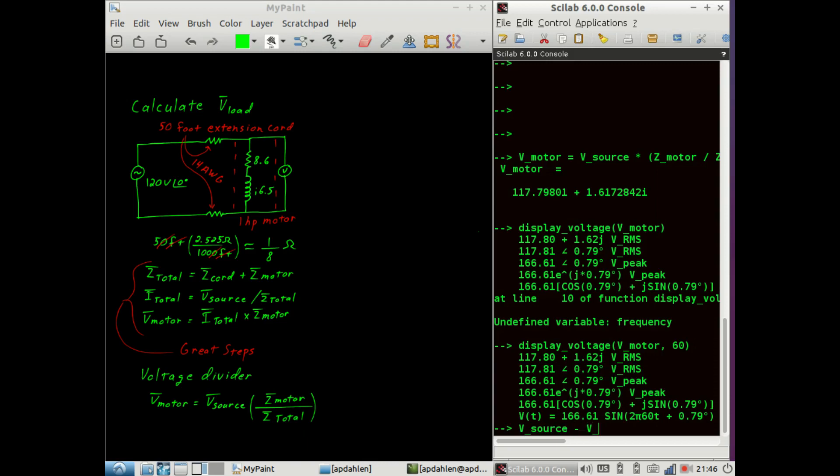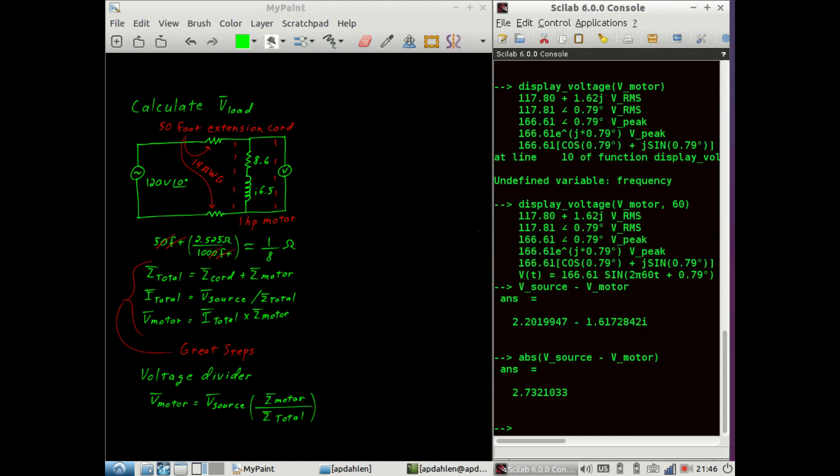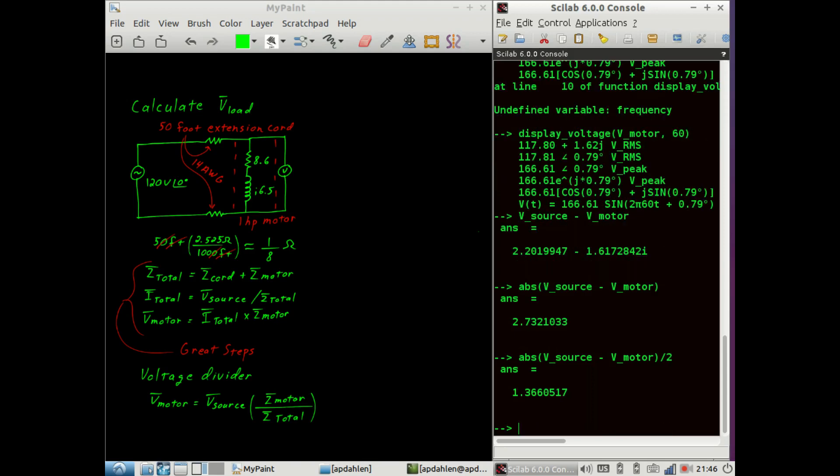If you're curious, you can calculate the voltage drop across the extension cord, and that is the source voltage minus the motor voltage. In absolute terms, which is the voltage you would measure with a voltmeter, you end up with 2.7 volts. Or if you prefer, you could divide that by 2 and talk about the voltage drop across each individual resistor, which is about 1.4 volts.